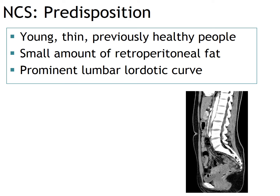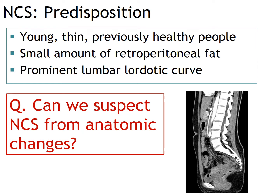Nutcracker syndrome usually occurs in young, thin, and previously healthy people. These patients usually have a small amount of retroperitoneal fat, which acts as a cushion between the aorta and SMA, and these patients usually have prominent lumbar lordosis. The first question in this talk is: can we suspect nutcracker syndrome from these anatomic changes?